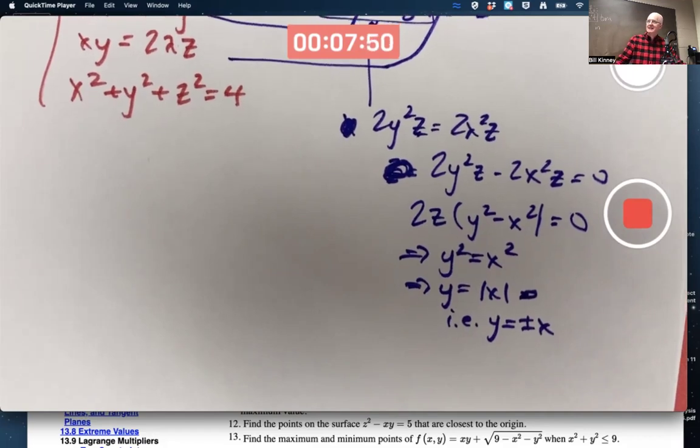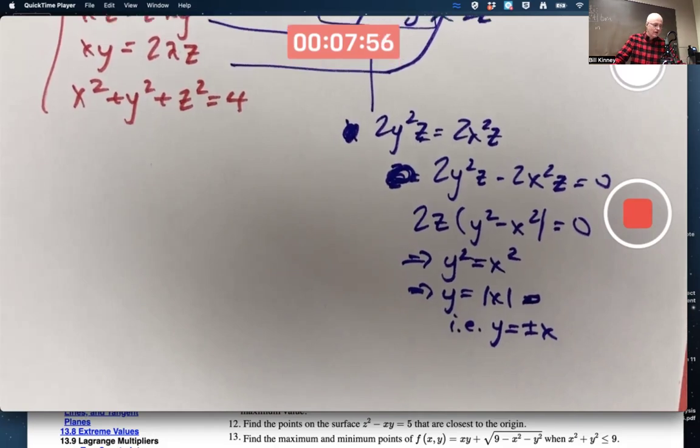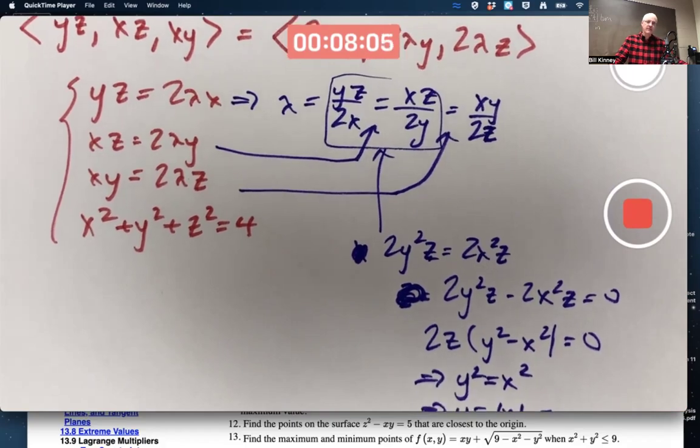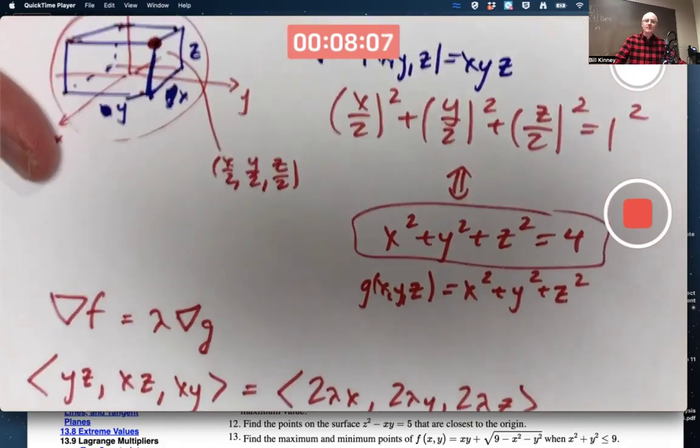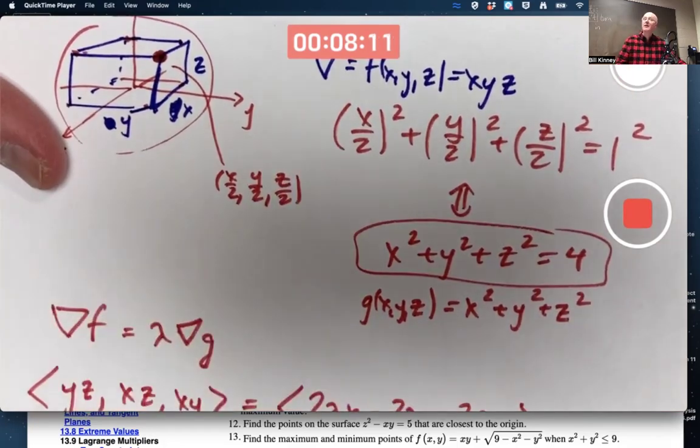Similarly, you would get X is plus or minus Y. Or Y is plus or minus Z. And X is plus or minus Z. Yeah, the X, Y, and Z all have to be positive lengths. That's true. I was taking them to be lengths to begin with. So effectively, you were saying they're all the same.